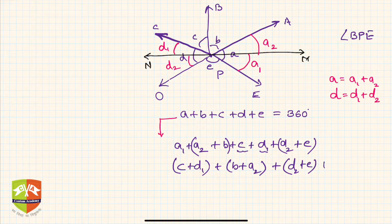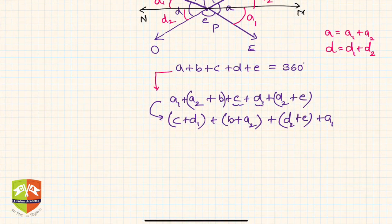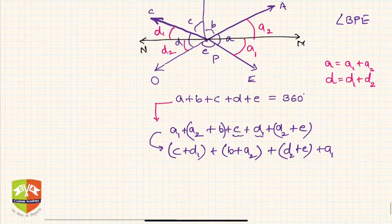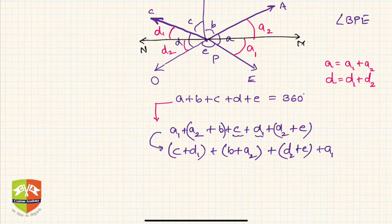Now what is c plus d1? So c plus d1 is this angle and c is this angle, so c plus d1 will be nothing but this whole angle. And hence I can write that is directly equal to angle BPN. And b plus a2, if you see, this is b, this is a2, so b plus a2 is angle BPM.